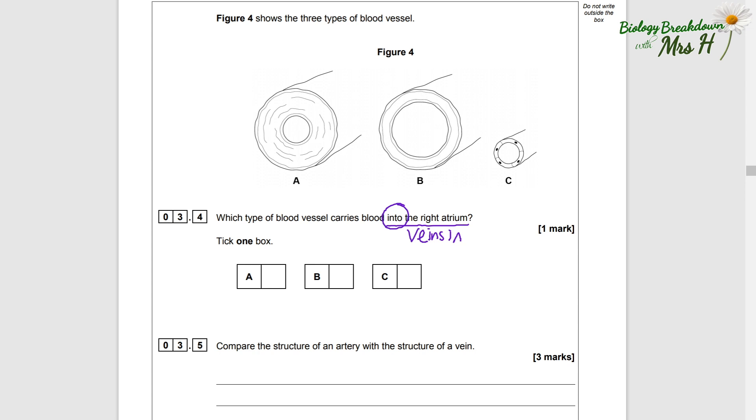So we now have to work out which one A, B, or C is a vein. Well, A is an artery - how can we tell? It has thick wall which is made up of elastic tissue and muscle so that it can withstand the high pressure.